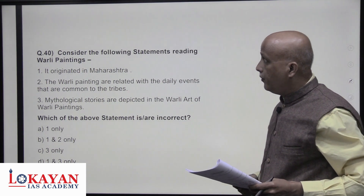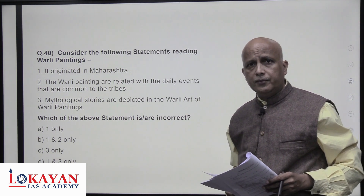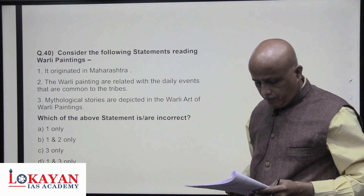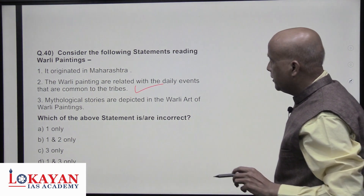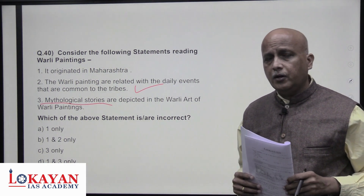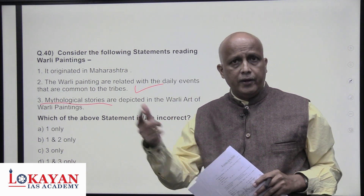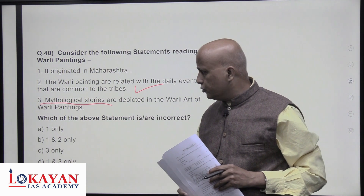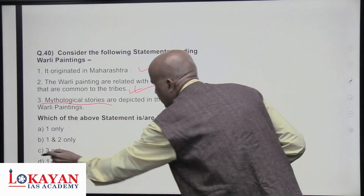Consider the following statements about Warli painting. It originates in Maharashtra, in the Thane district — correct. Warli paintings relate to daily events common to the tribes — correct. Mythological stories are depicted in Warli painting — not true; Warli paintings depict daily life, nature, dances, rearing of children, and even modern objects like aeroplanes, trains, and cycles. Mythological stories are not a feature of Warli art. Statements one and two are correct, three is wrong — answer is C.